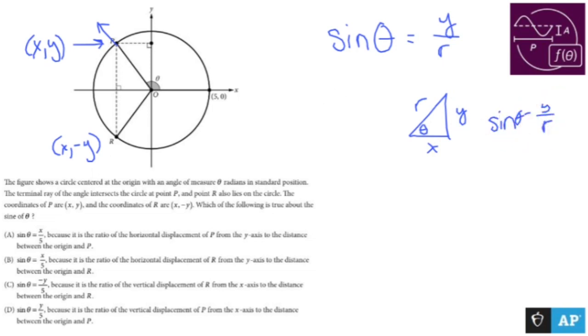In this case, I know what r is. Okay. R is 5. So I could say sine theta, in this case, is y over 5.